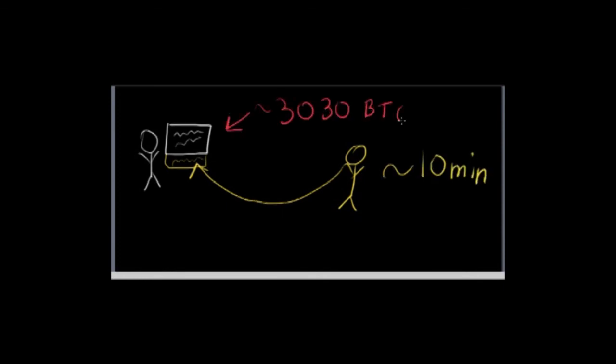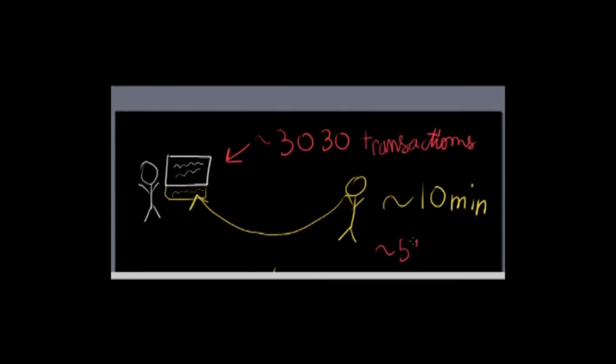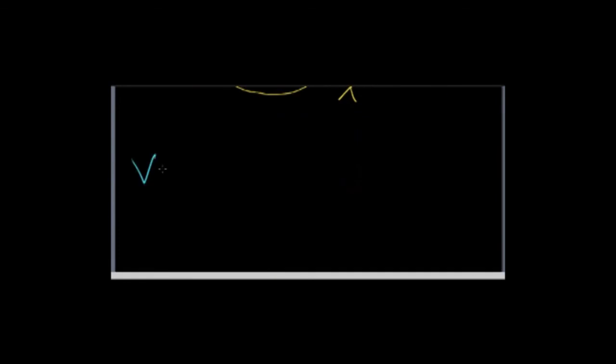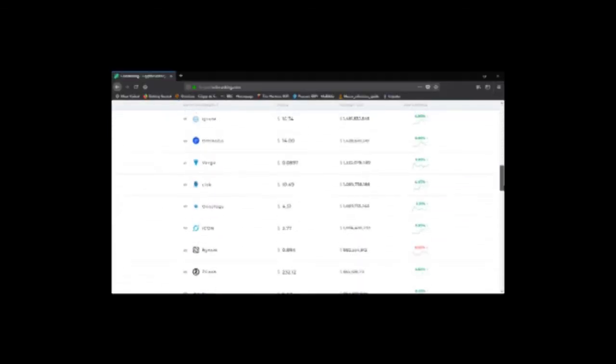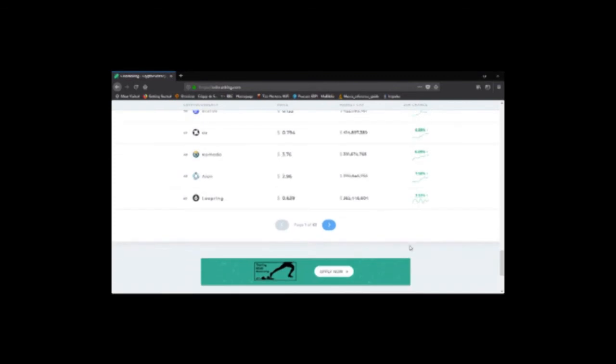Since each block contains around 3000 transactions, Bitcoin can manage up to 5 transactions per second. Meanwhile, Visa can manage up to 24,000 transactions per second. But that doesn't kill Bitcoin, there are still many other alternatives trying to solve these problems.